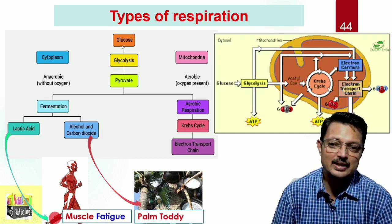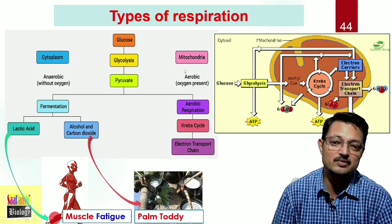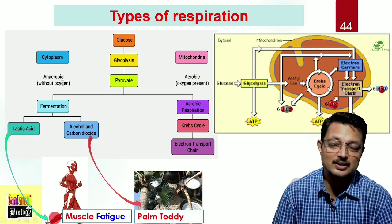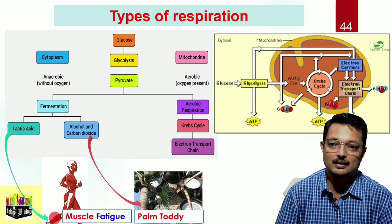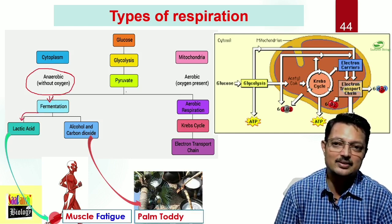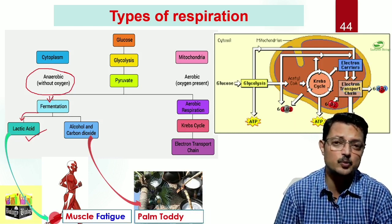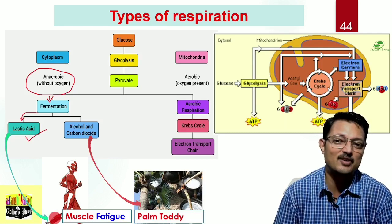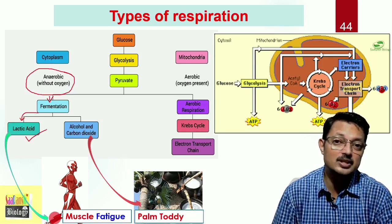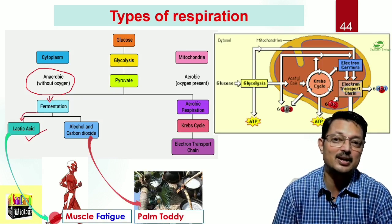Glucose in the cell is broken into a three-carbon compound called pyruvate, since glucose has six carbons. Pyruvate has certain options: if it gets oxygen, respiration will be called aerobic respiration; if it does not, it will be called anaerobic respiration. In case of anaerobic respiration, it results in fermentation. In muscle cells of animals, pyruvate is converted into lactic acid, and this accumulated lactic acid causes muscle fatigue during sudden exercise, because the body cannot supply enough oxygen to those cells.